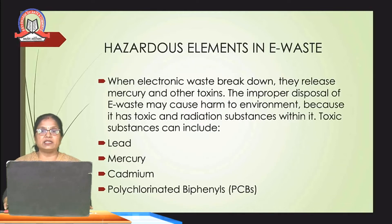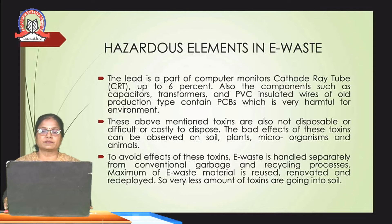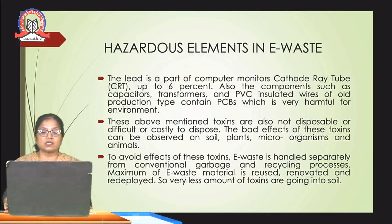When electronic waste breaks down, it releases mercury and other toxins. The improper disposal of e-waste may cause harm to the environment because it has toxic and radiation substances within it. Toxic substances can include lead, mercury, cadmium or PCBs. Lead is a part of computer monitor cathode ray tubes at up to 6%. Components such as capacitors, transformers and PVC insulated wires of old production types contain PCBs, which are very harmful to the environment. These toxins are also not disposable, or are difficult and costly to dispose.